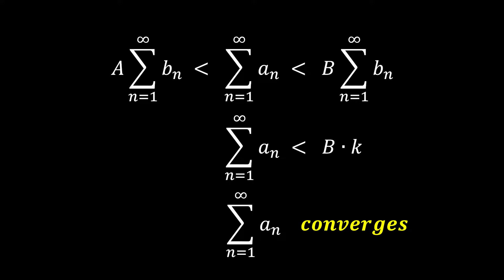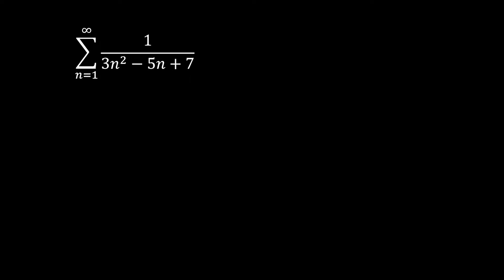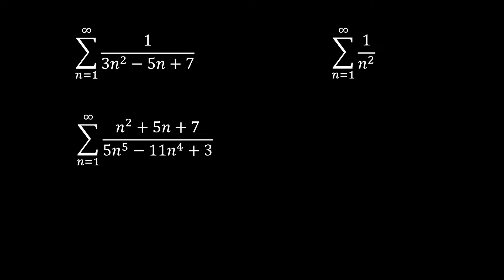To use the limit comparison test, we need the second series, which is obtained by disregarding all but the highest powers of n in both the numerator and the denominator of the given problem. For example, here we have an infinite sum of 1 over 3n squared minus 5n plus 7. Keeping the highest power in the numerator as it is, we focus on the denominator, removing all terms except the highest power term, which is n squared. This gives us the second series we need: the infinite sum of 1 over n squared.